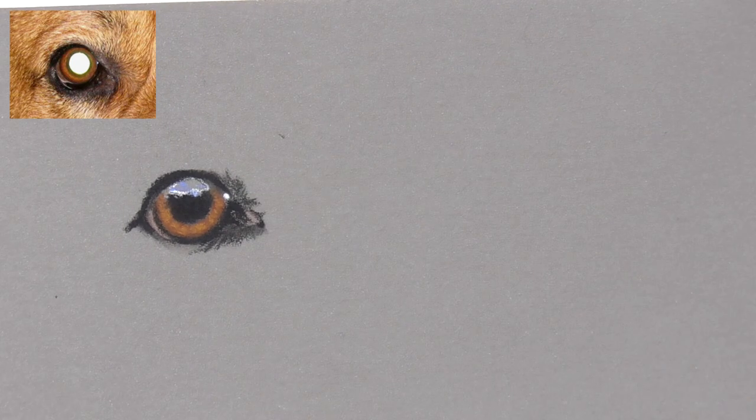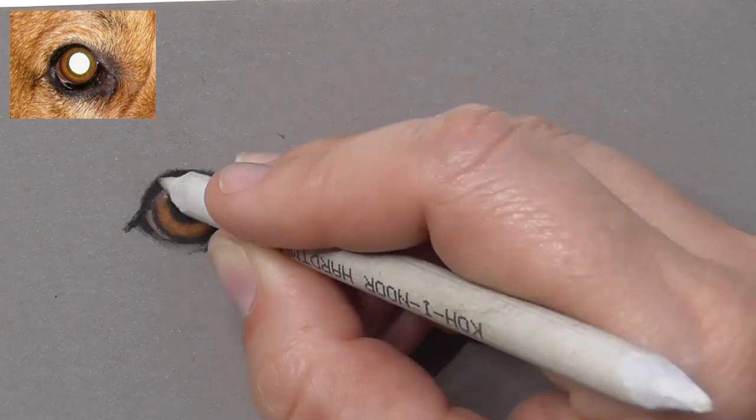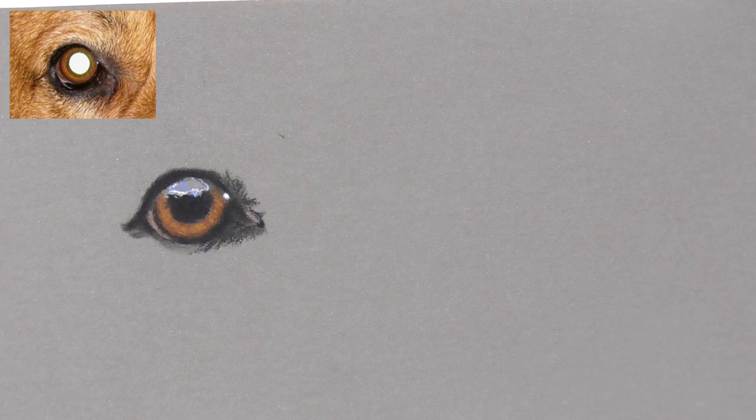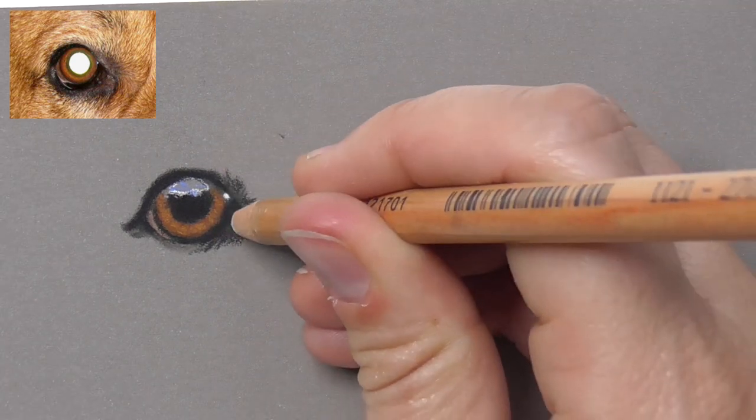And then add here black in the eye corner and blend it just again with the paper stamp.